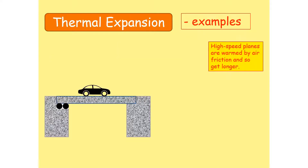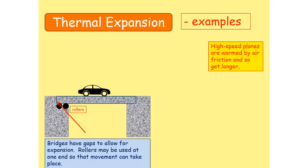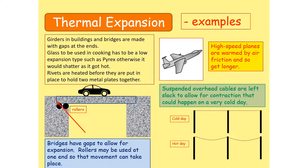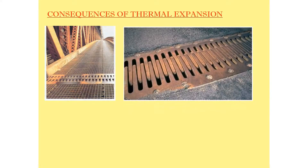Thermal expansion and contraction of solids can cause many problems in everyday life, so it is very important to consider the behavior of different materials under different weather conditions — both very low and very high temperatures. For this reason, when we design bridges, aeroplanes, and overhead cables, we have to consider thermal expansion. You can see expansion joints in bridges which help maintain shape under very hot weather. Without expansion joints, a bridge might buckle when the material expands.